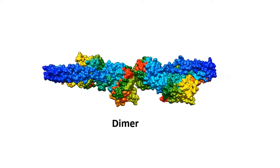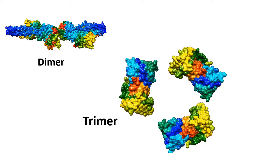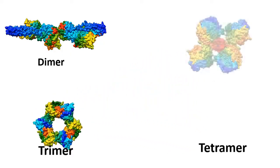If two proteins come together, we call that a dimer. If three come together, they make a trimer, and so on.